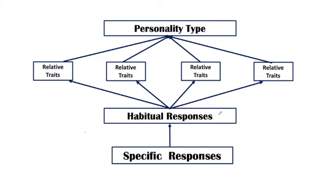Phir agar jo habitual responses the, unke jo relative traits hote hain, woh unhone apne third level pe consider kiya. Us habit ke — for example, koi bhi ek person ki habit hai, usse jo uske related traits hain — unko third level pe consider kiya gaya. Phir jo relative traits aaye, unme jo dominating traits yaani jinka percentage zyada hai, unko unhone ek personality type mein conclude kar diya. Chaliye isko ek example se samajh lete hain.